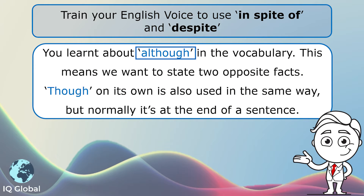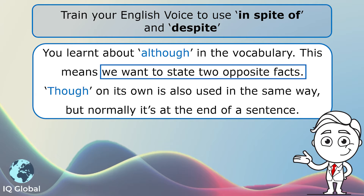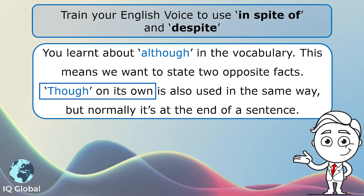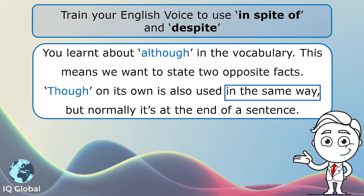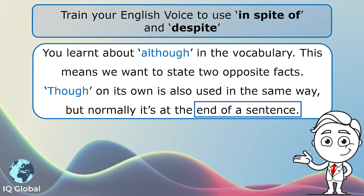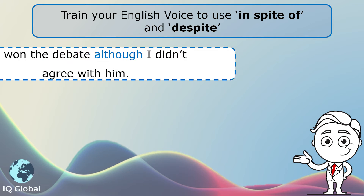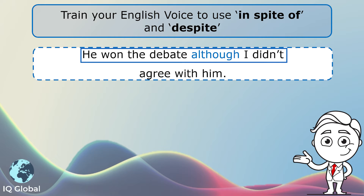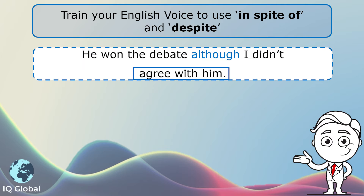You learned about 'although' in the vocabulary. This means we want to state two opposite facts. 'Though' on its own is also used in the same way — in other words, to state two opposite facts — but normally it's at the end of a sentence. Let's have a look at sentence one using the word 'although': 'He won the debate although I didn't agree with him.' This sentence contains two facts. The first is that he won the debate; the second is that I didn't agree with him. Both facts relate to the debate but seem opposite, and I'm joining them with 'although'.